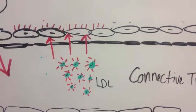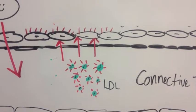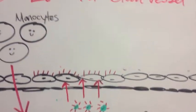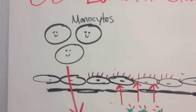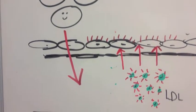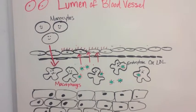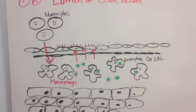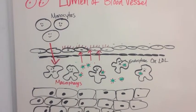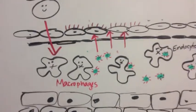The monocytes, once inside the intima of the blood vessel, differentiate into macrophages.